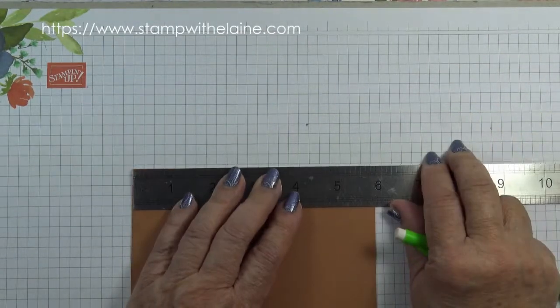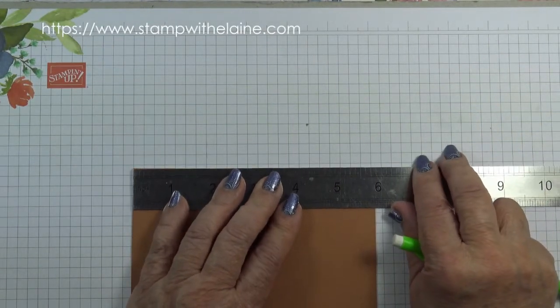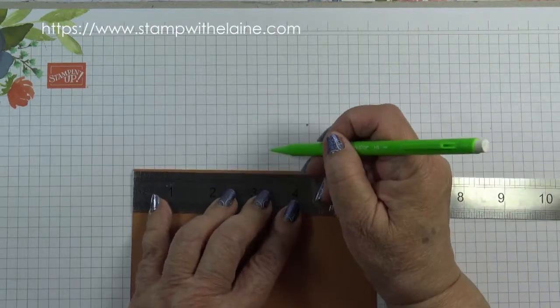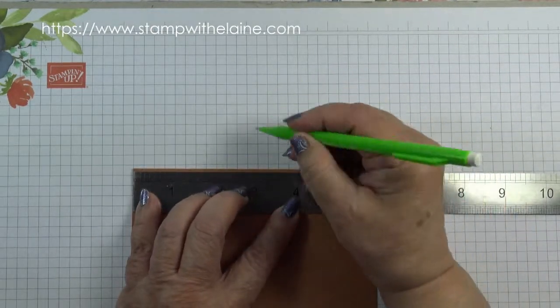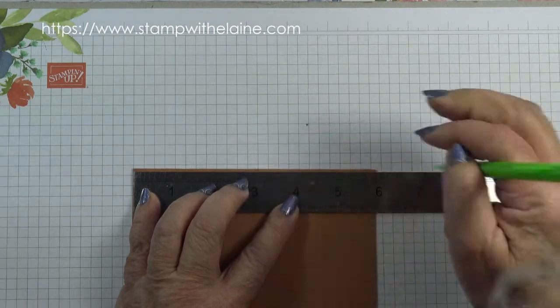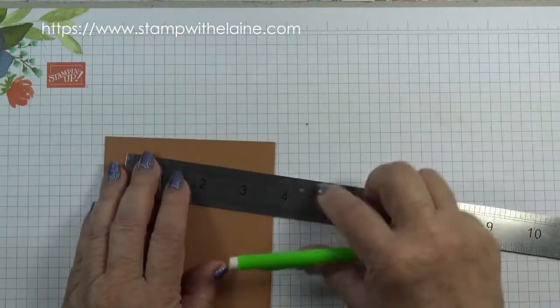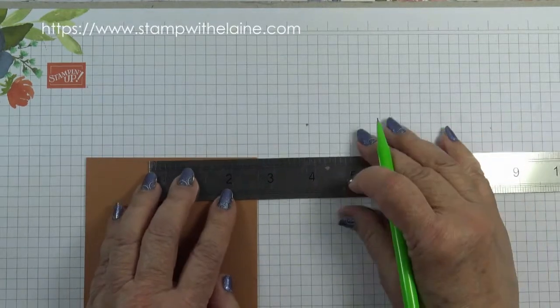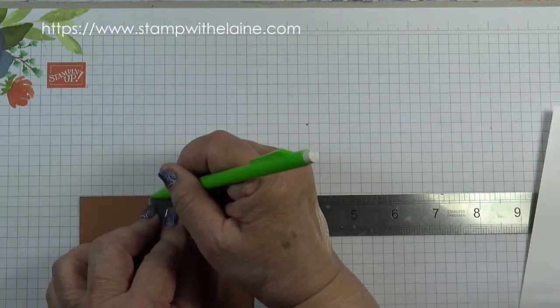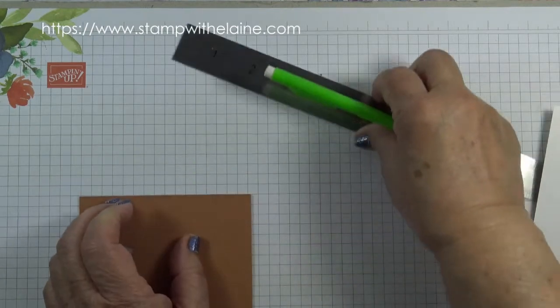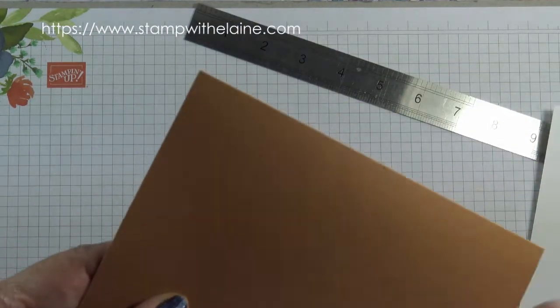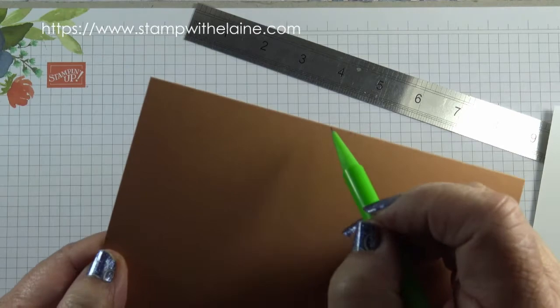So you want to measure three and a half inches along here on the fold of the card and then on the left hand side you want to measure two and a half inches. So there's a mark here and a mark there.